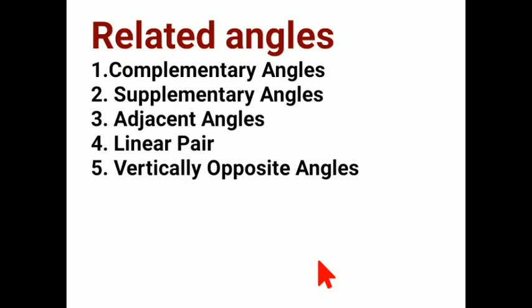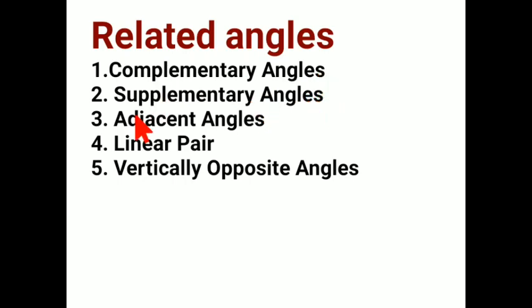Proceeding forward, we have related angles which we have to study in this chapter and use to solve various exercise problems from your book. The first is complementary angles. Number two is supplementary angles. Number three is adjacent angles. Number four is linear pair of angles. And number five is vertically opposite angles. We will study all of these in detail.